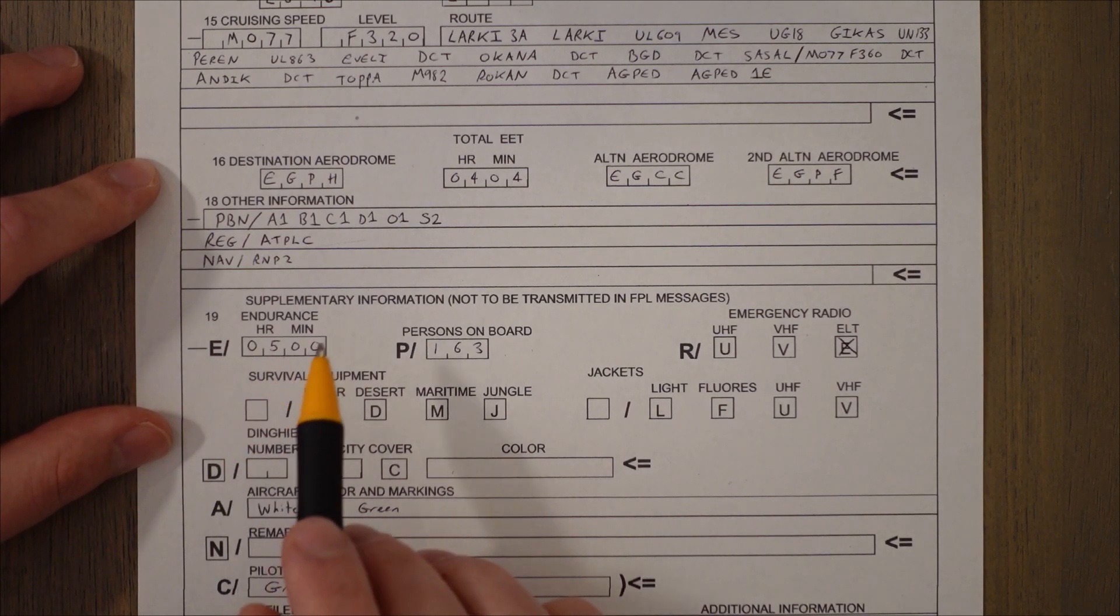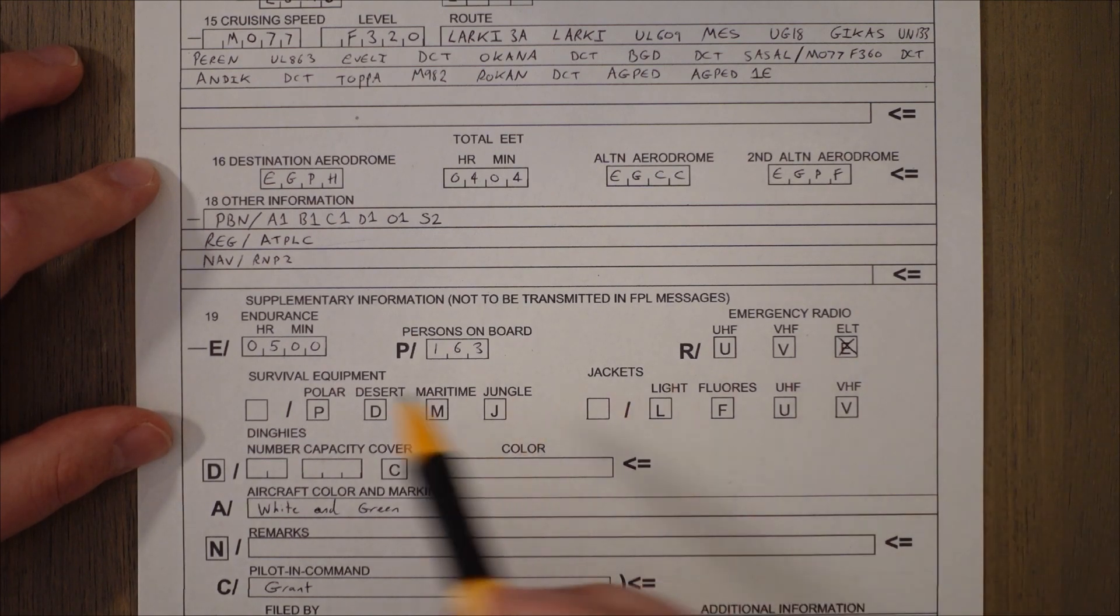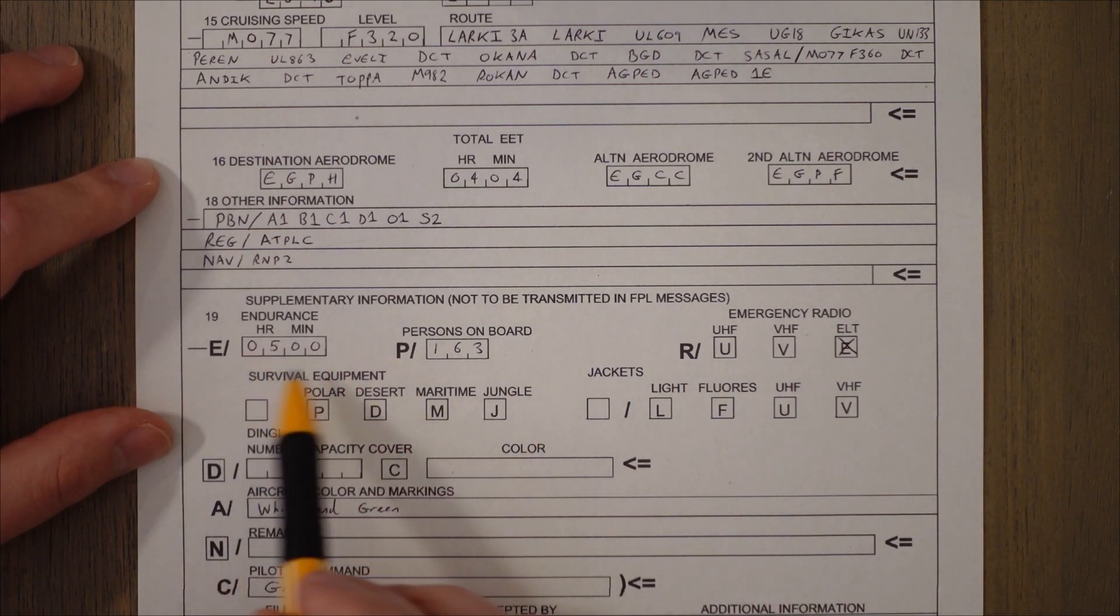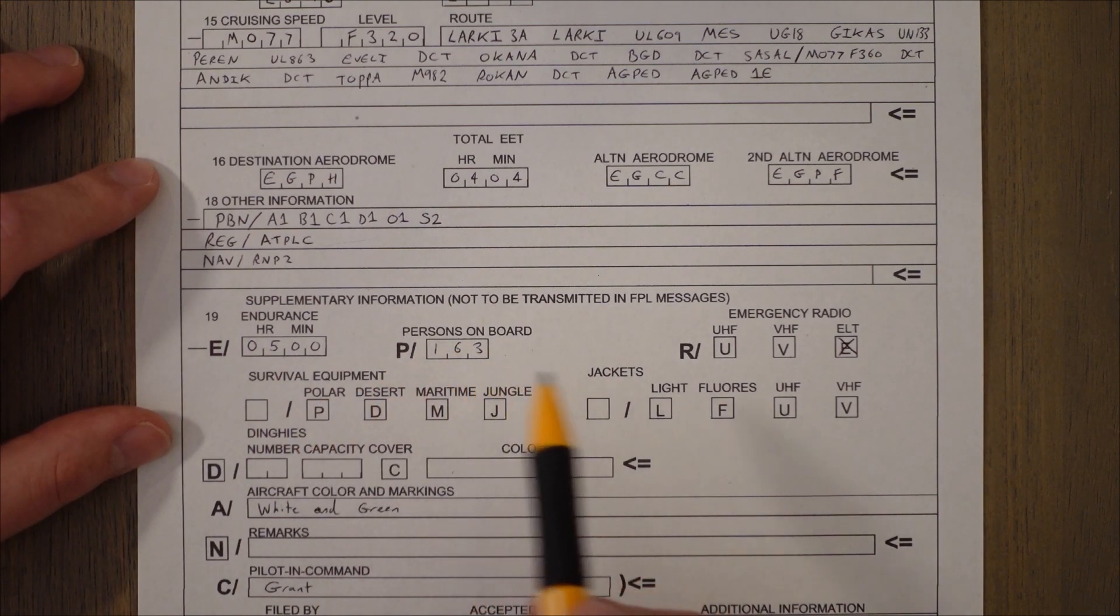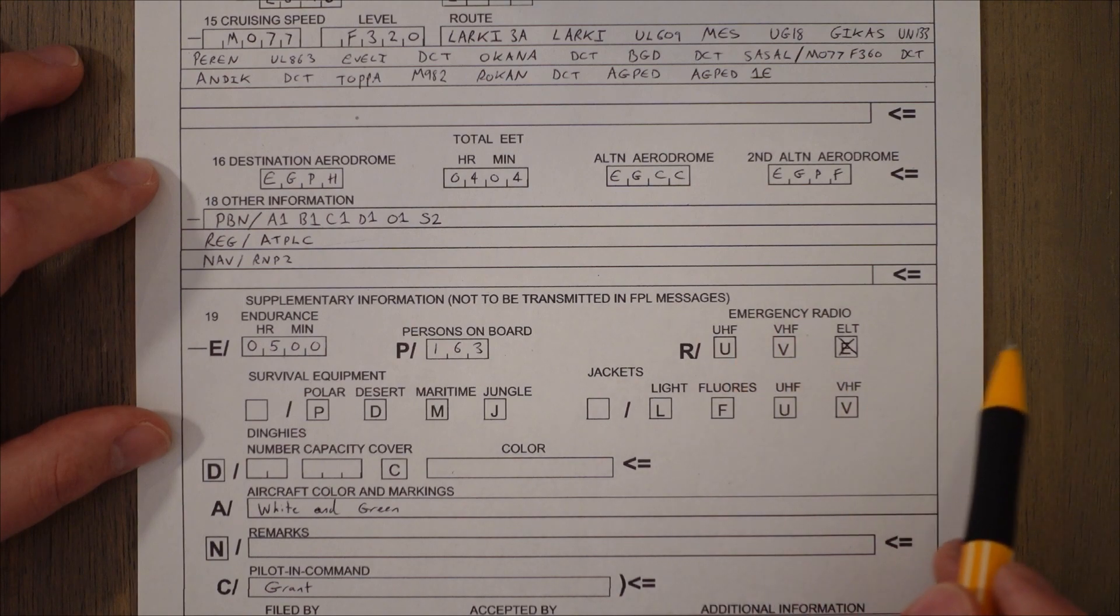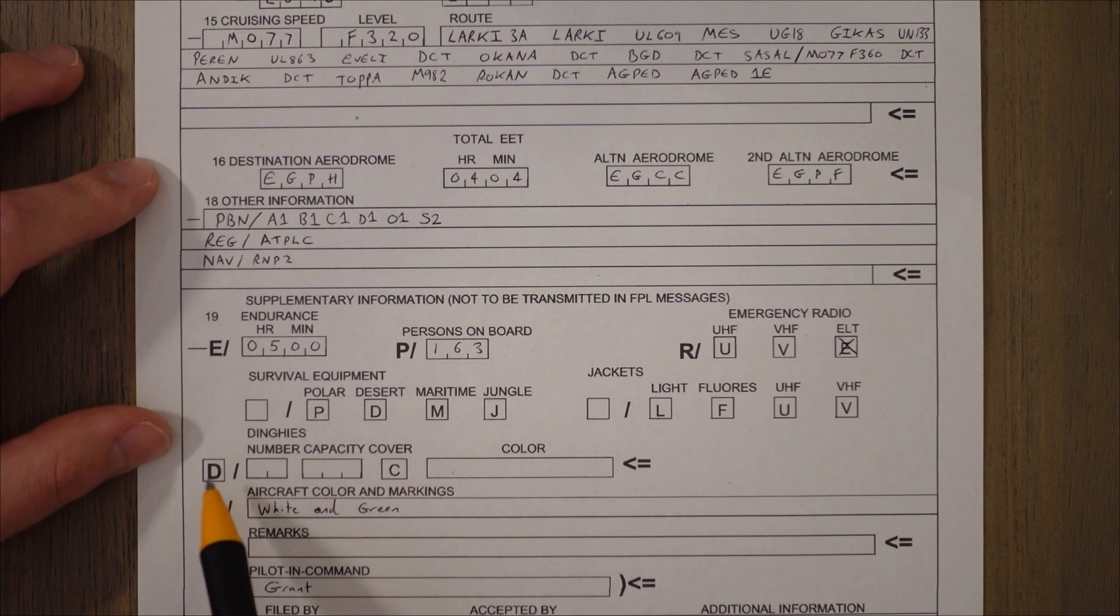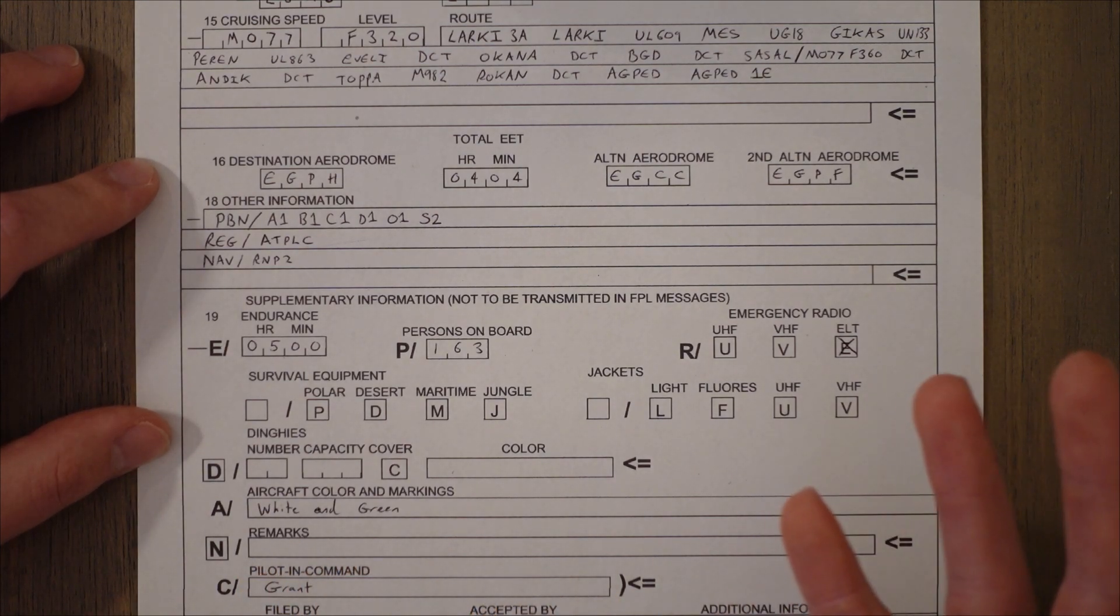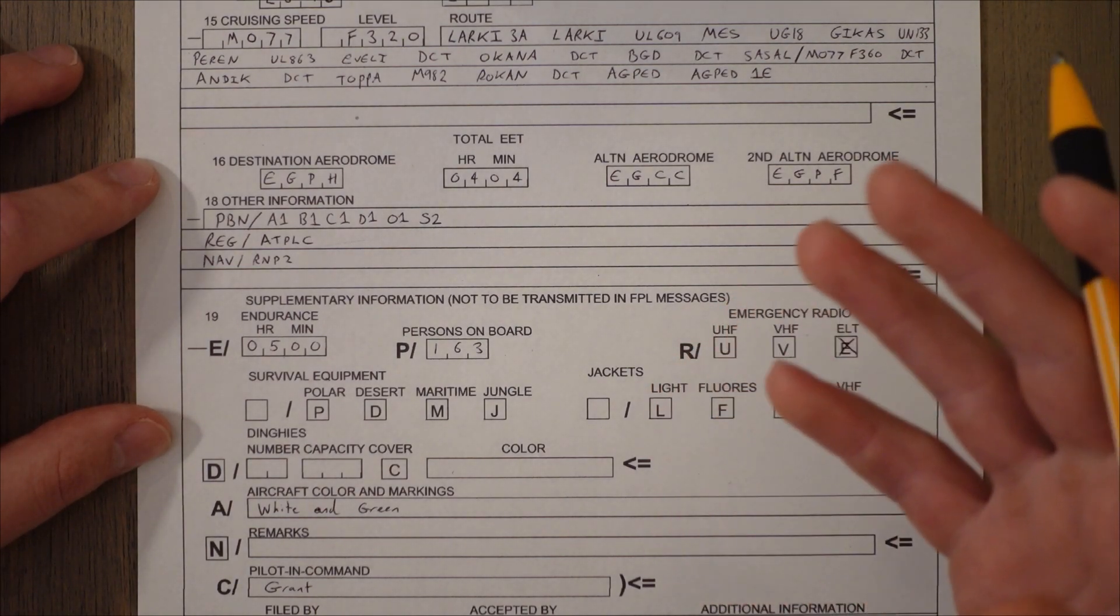Then in section 19 we fill out all the search and rescue information including the endurance based on the amount of fuel that we plan to load on board, the amount of people on board, that's passengers and crew, what sort of emergency radio we've got, what sort of survival equipment we've got, jackets, life jackets if we've got any, dinghies or life rafts if we've got any, the color of the plane, any additional remarks, and the pilot in command. Then you've completed that flight plan and you would submit it and it would be given to the relevant air traffic control authorities for your route.